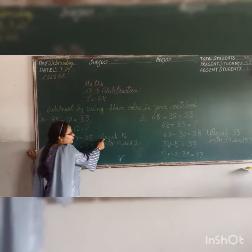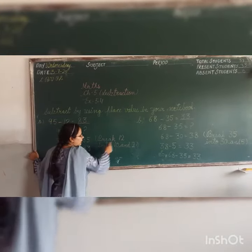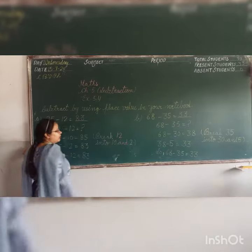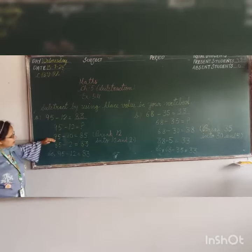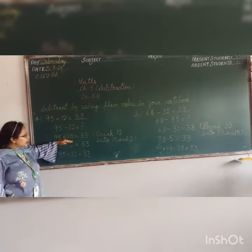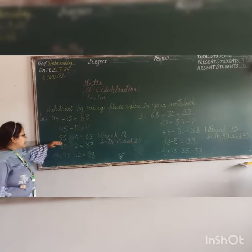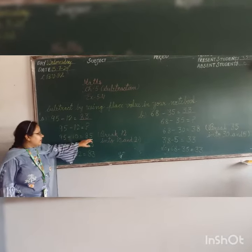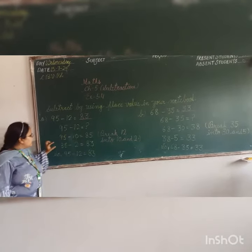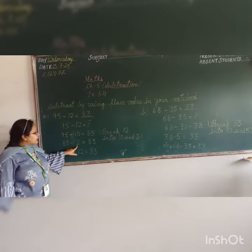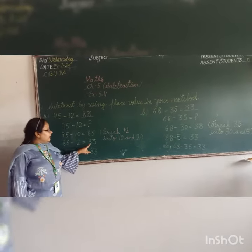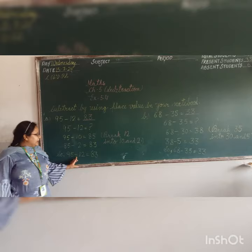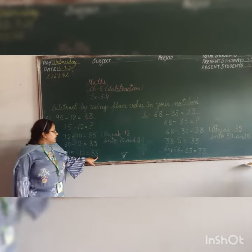Break 12 into 10 and 2. 12, which means break. 95, which means 10 minus — which means too much. 95, which means 10 minus is 85. Now, 85 means 2 minus, which means 83. So, 95 minus 12 is equal to 83.